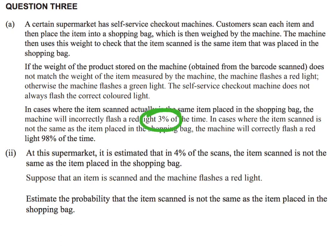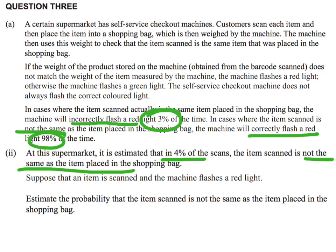There are two important percentages. The first one is about incorrectly flashing a red light 3% of the time. Then when the item scanned is not the same as the item in the bag, the machine will correctly flash a red light 98% of the time. We've also got 4% — in 4% of the scans, the scanned item is not the same as the item in the shopping bag.